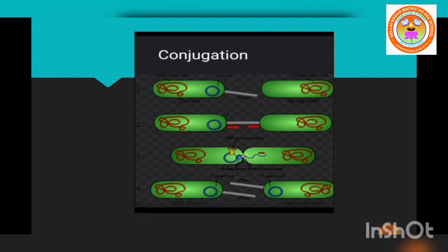The pilus grows in size and forms the conjugation tube, a tube-like structure formed between the donor and recipient. Then the plasmid of the donor cell, which has the F-plus fertility factor, undergoes replication. Only the donor bacterium with the fertility factor, that is the F-plus factor, undergoes replication.